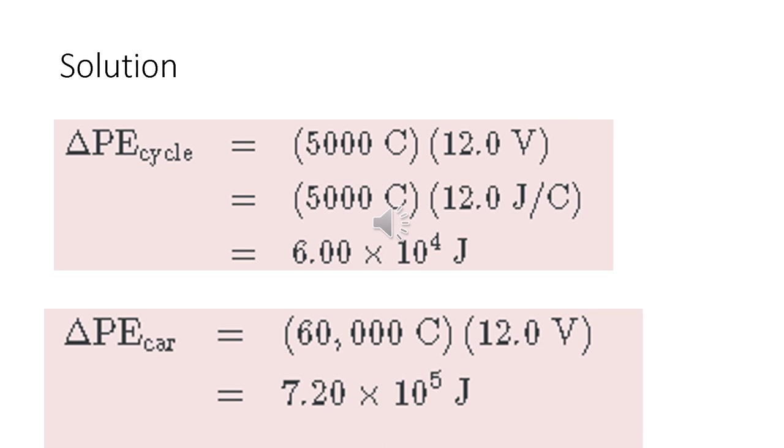Now let's proceed to the car. 60,000 coulombs multiplied by 12 volts. Do the same process, we will cancel the coulomb. Multiply 60,000 by 12 and that will be 7.20 times 10^5 joules. That is the solution of the problem. I hope you understood how to solve electric potential and work based on work.